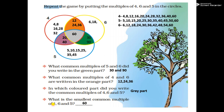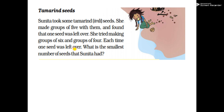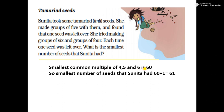60 seeds can be grouped into groups of 4 (giving 15 groups), groups of 6 (giving 10 groups), or groups of 5 (giving 12 groups) — all exactly. But since one seed is always left over, the answer is 60 plus 1. The smallest common multiple of 4, 5, and 6 is 60, so the smallest number of seeds that Sunita had is 60 + 1 = 61.